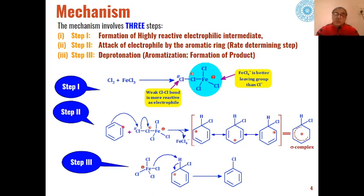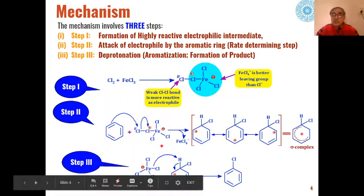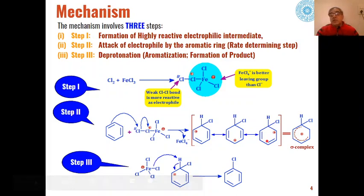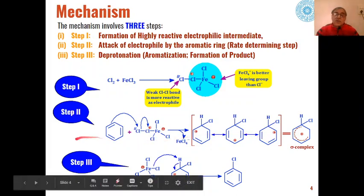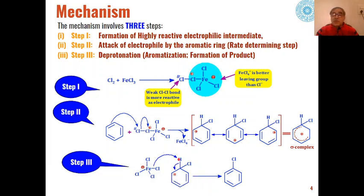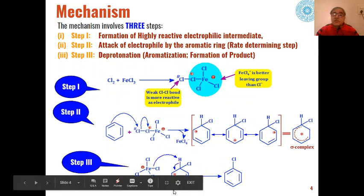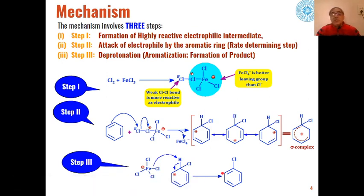In the second step, the aromatic system — for example, benzene — reacts with this more electrophilic Cl⁺ intermediate to give a sigma complex, which is a resonance-stabilized carbocation. In the final step, the FeCl4⁻ formed in the first step extracts one proton from the sigma complex, re-aromatization takes place, and chlorobenzene is obtained as the product. This three-step mechanism describes the conversion of benzene to chlorobenzene via electrophilic aromatic substitution.